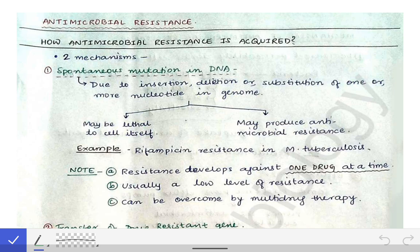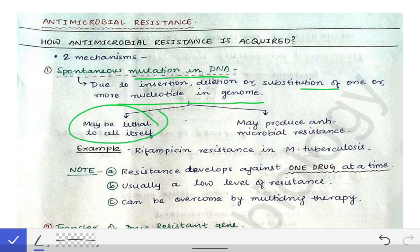The first mechanism is spontaneous mutation in the DNA. This is due to the insertion, deletion, or substitution of one or more nucleotides in the genome, which may lead to lysis or death of the bacteria itself, or may cause antimicrobial resistance. It is a double-edged sword — it may lead to death of the bacteria or to the development of antimicrobial resistance.